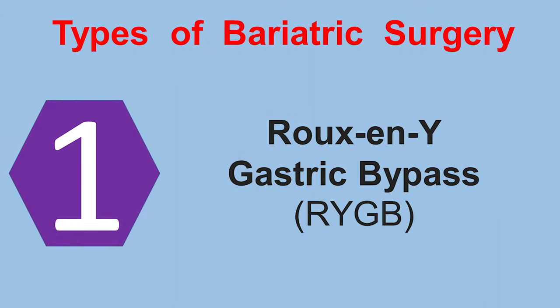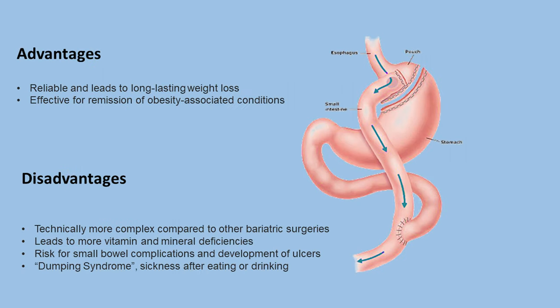There are six main types of bariatric surgeries and procedures. Roux-en-Y bypass surgery, commonly known as gastric bypass, remains one of the most commonly performed bariatric procedures. The stomach is divided into a smaller top portion, and the larger part of the stomach is bypassed and no longer stores or digests food. The small intestine is also divided and connected to the new stomach pouch to allow food to pass.